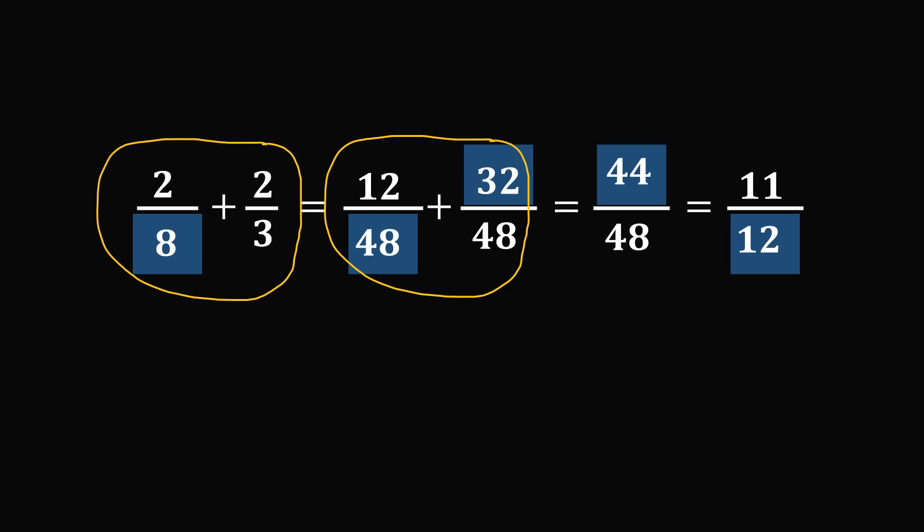If you were adding 2 over 8 plus 2 over 3, you would look for the lowest common denominator, and the lowest common denominator of 8 and 3 is equal to 24.